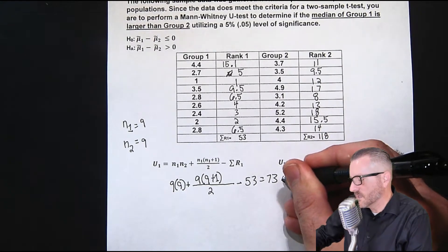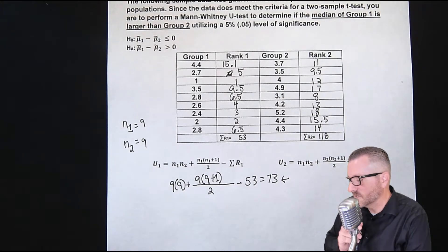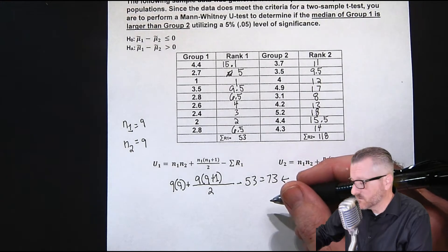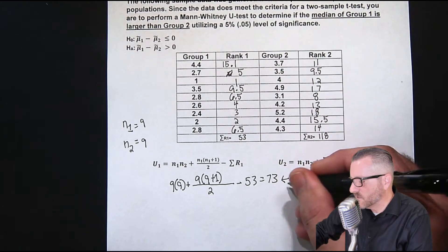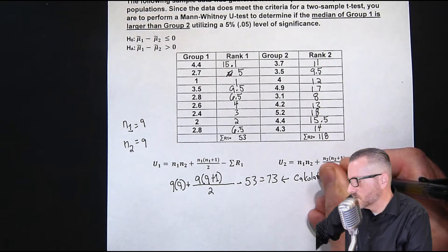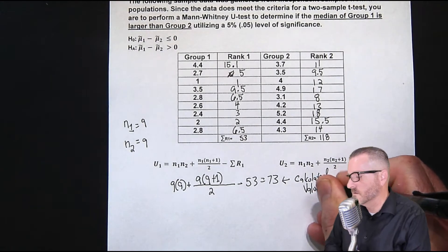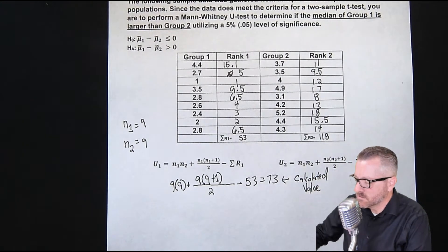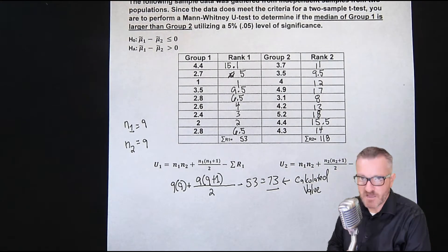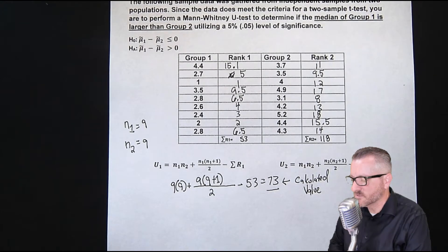So this is our 73 right here. This is our calculated statistic, or in this case, it's not called a statistic. We're going to say calculated value. We can say calculated U value to be more specific, but I want to say calculated value is fine.